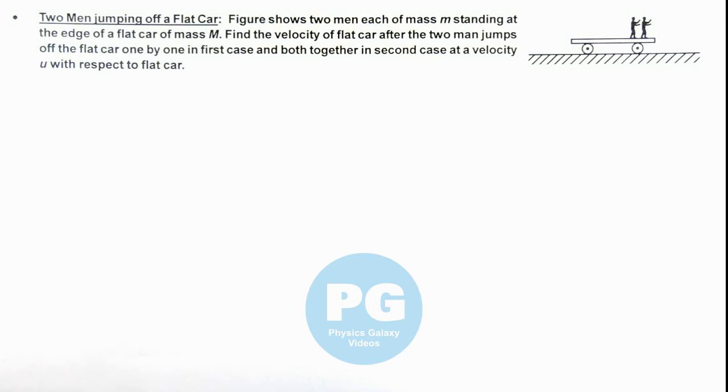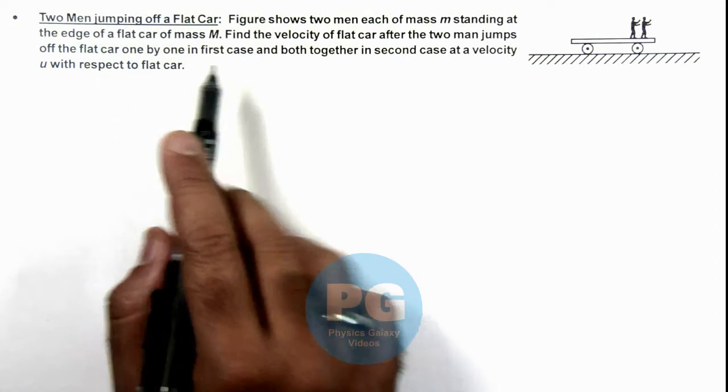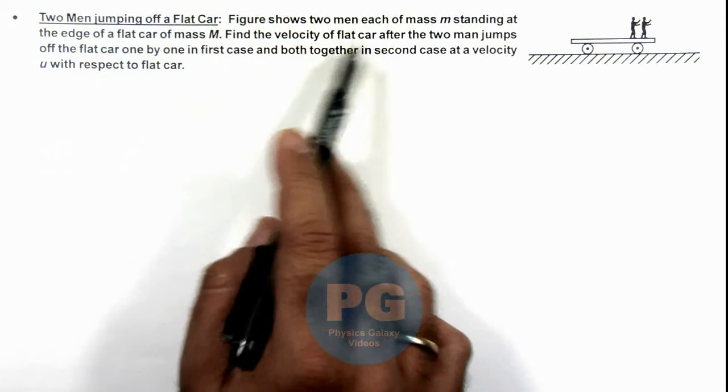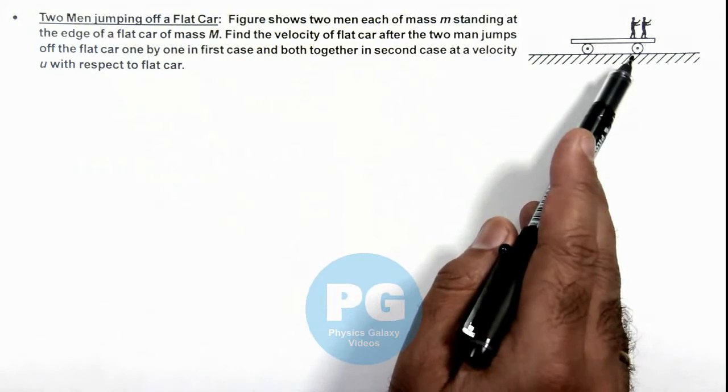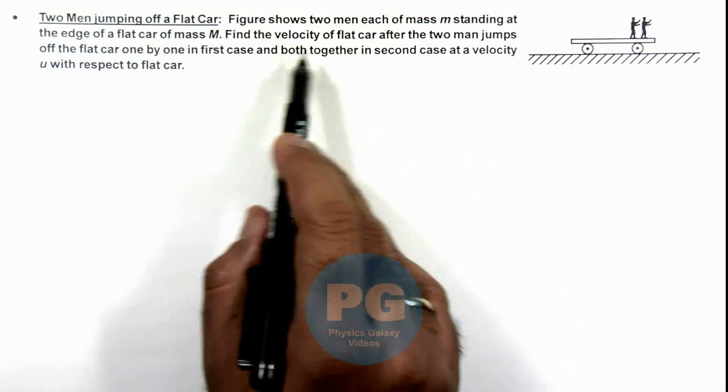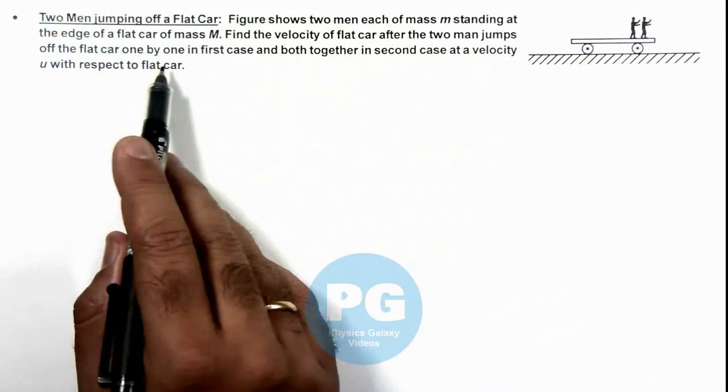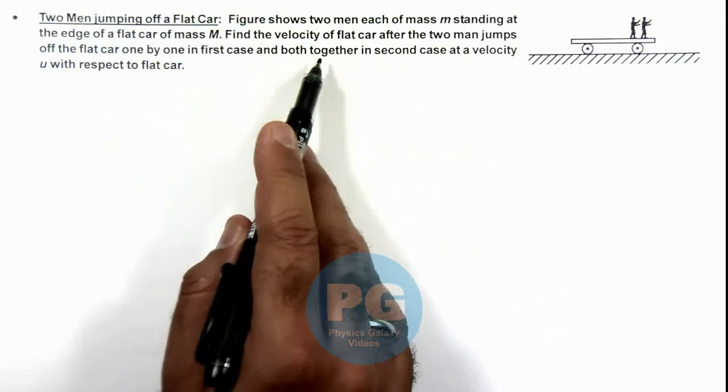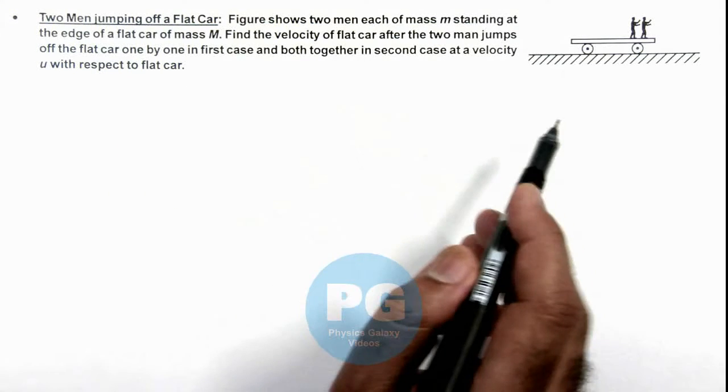In this illustration we'll discuss about two men jumping off a flat car. The figure shows two men, each of mass m, standing at the edge of a flat car of mass M. We are required to find the velocity of the flat car after the two men jump off the car one by one in the first case and both together in the second case, at a velocity u with respect to the flat car.